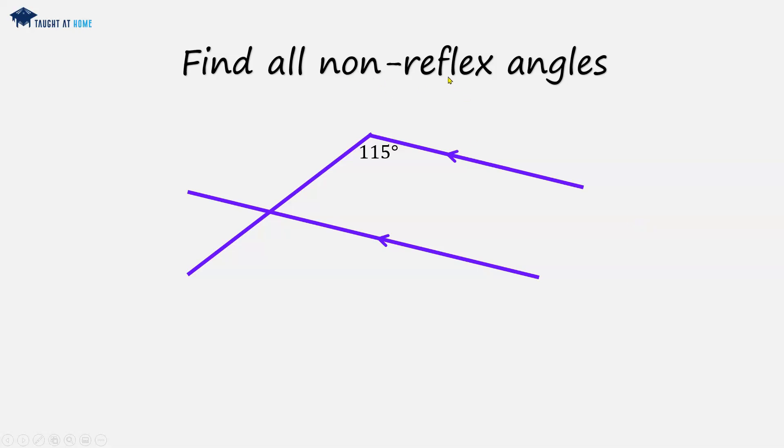Find all non-reflex angles. So non-reflex angles are angles that are less than 180 degrees. We're given an angle here of 115 degrees. We've got two parallel lines, and we've got a straight line that cuts through them.